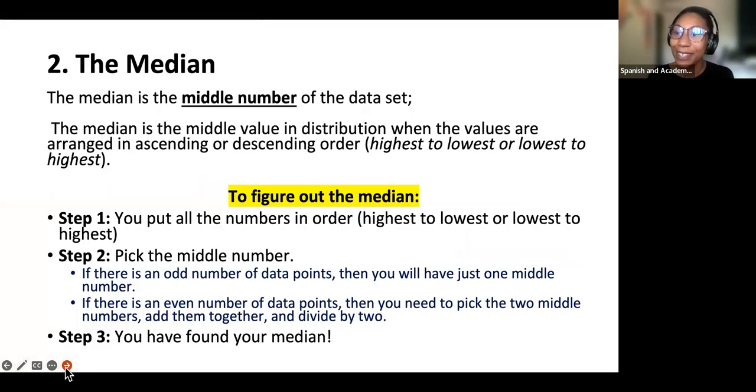Let's move on to the median. The median is the middle number of a dataset. I like to think of the median as the thing that stands between me and another lane of traffic or me in the ditch. The median is the middle value in a distribution when the values are arranged in ascending or descending order, highest to lowest or lowest to highest. To figure out the median, you would put all the numbers in order from highest to lowest or lowest to highest, then pick the middle number.